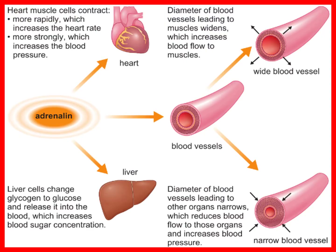An example is adrenaline, which is secreted by the adrenal gland. It travels through the blood to its target organs, which could be the heart, blood vessels, or liver. In the case of the heart, it makes heart muscle cells contract more rapidly and strongly, therefore blood flow and blood pressure increase, giving muscle cells access to more glucose.